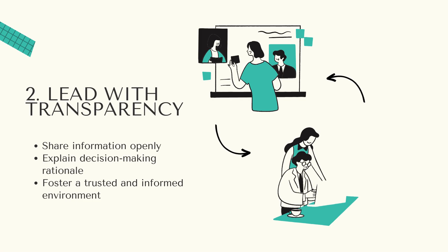Secondly, lead with transparency. Transparency is key to cultivating trust and accountability. Share information openly and encourage your team to do the same. When decisions are made, explain the rationale behind them. This openness helps to create an environment where team members feel informed and valued. Transparency fosters a culture where accountability is not seen as a burden but as a shared commitment to success.